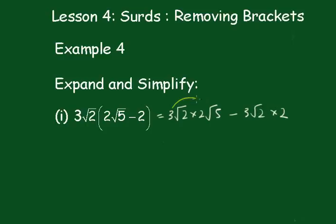So we'll multiply these ones together first, and we get 6 times these two underneath, 10, minus, we'll multiply these two together here, we get 6√2. And we can't simplify that any further because √10 and √2 are different surds.